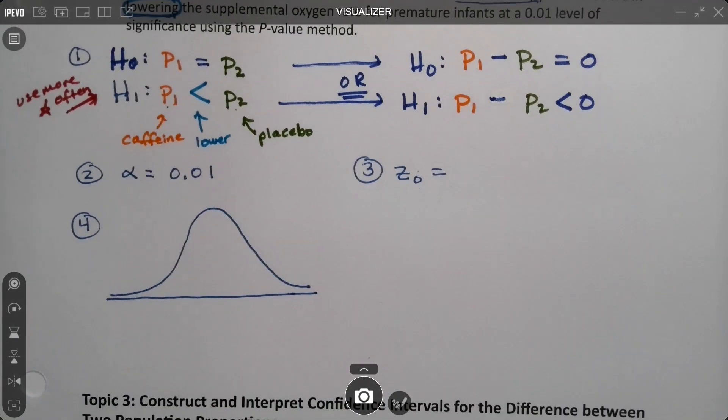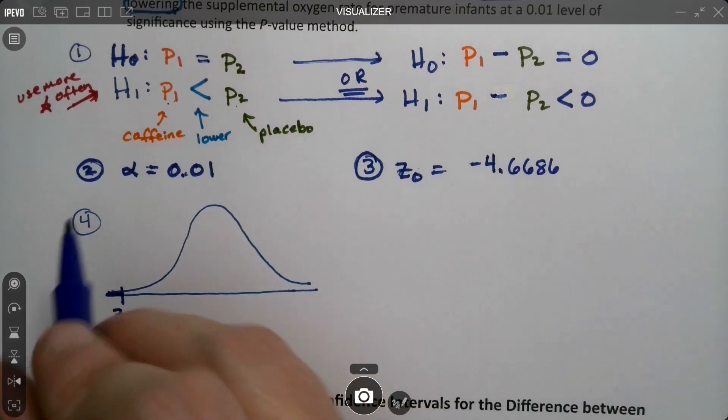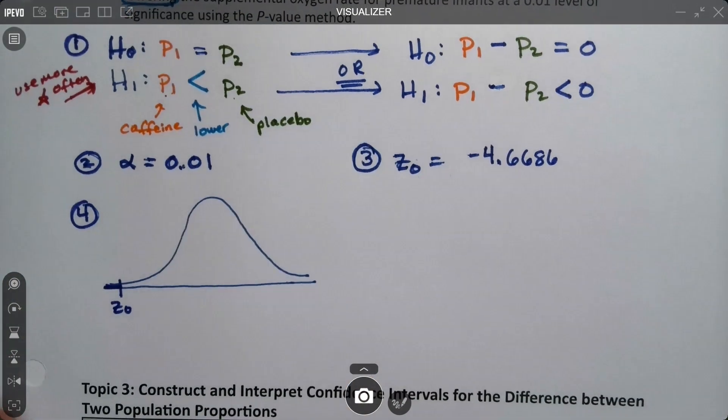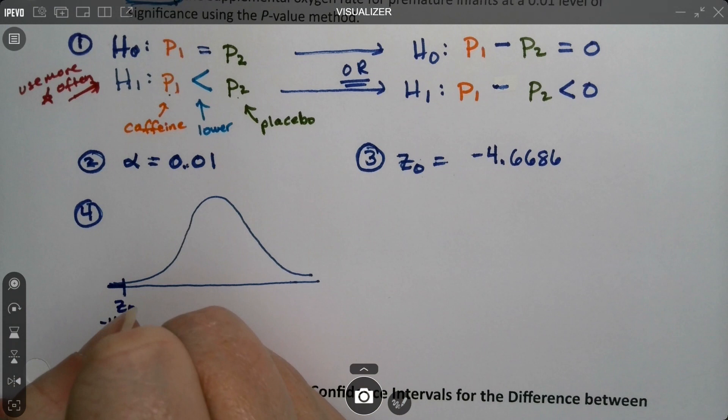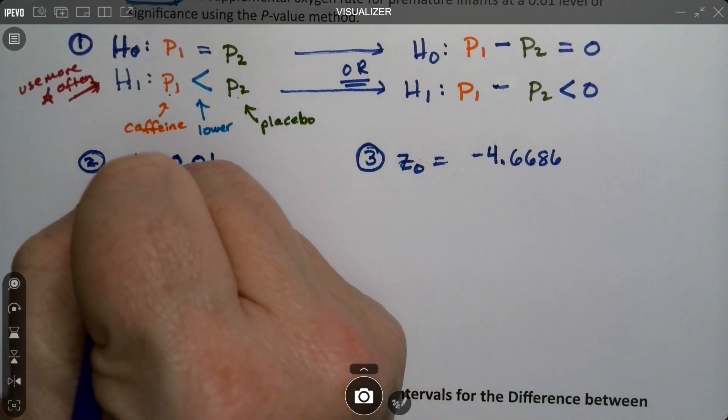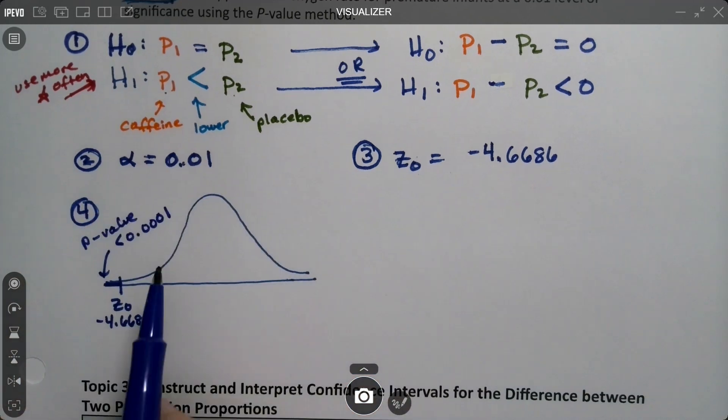And then step four is the p-value in the picture. So I've got my curve right here. This z value is negative 4.6686, it's really far over to the left. The p-value is so small that StatCrunch won't even give it to us - it just tells us that it's less than 0.0001.